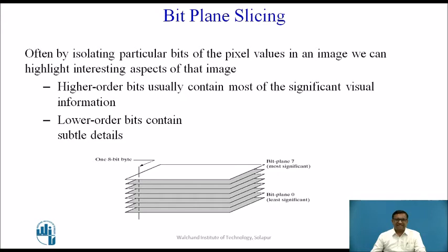The last algorithm for image enhancement is bit plane slicing. Assume that a pixel in an input image is represented by 8 bits. The least significant bit — bit 0 — of all the pixels is collected together and represented in bit plane 0. Similarly, how many planes can we construct if the input pixel is represented by 8 bits? We can construct 8 planes. Bit plane 0 is the least significant position and bit plane 7 represents the most significant position.